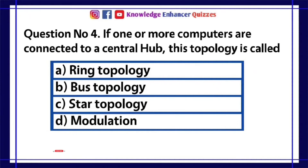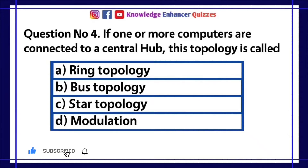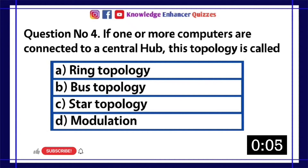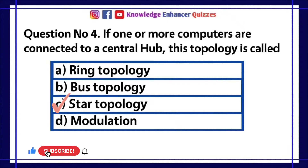Question number 4. If one or more computers are connected to a central hub, this topology is called. A ring topology. B bus topology. C star topology. D modulation. Option C is the right answer.